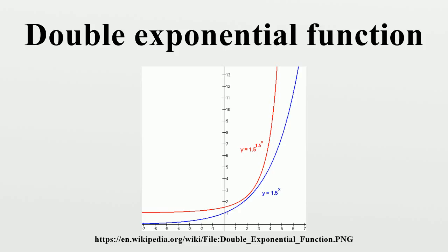Factorials grow faster than exponential functions but much slower than doubly exponential functions. Tetration and the Ackermann function grow even faster. See big O notation for a comparison of the rate of growth of various functions.